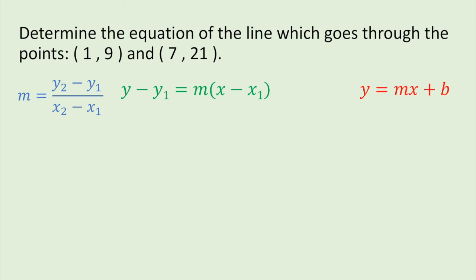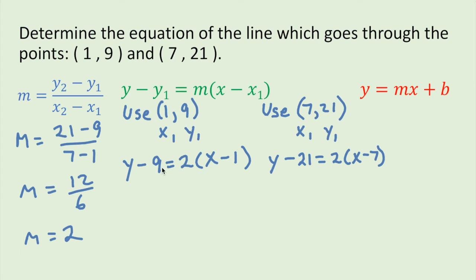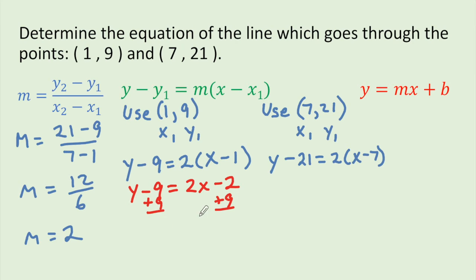Next, we are going to convert to slope-intercept form of the equation of a line. All you need to do is multiply one of these out and solve for y. We distribute, then add 9 to both sides, and you get y equals 2x plus 7. If you chose to use the other point, you would still end up at y equals 2x plus 7. We've now done point-slope form and slope-intercept form.